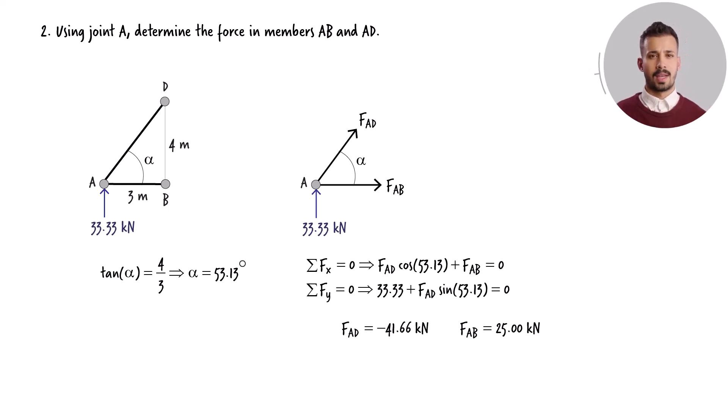The sign associated with each force reveals if the member is experiencing tension or compression. A positive sign signifies that the member is under tension, while a negative sign indicates that the member is in compression. Therefore, member AD undergoes compression, and member AB is subjected to tension.